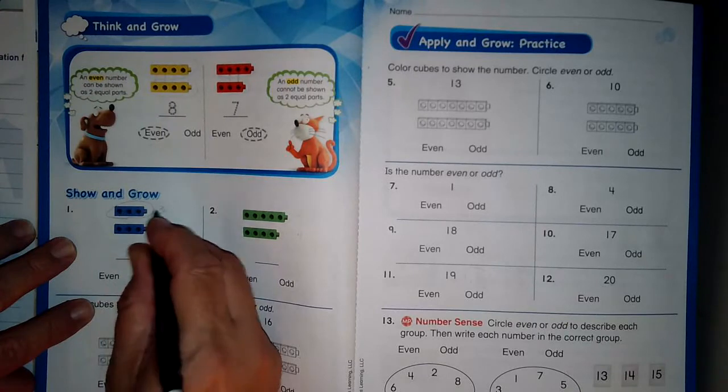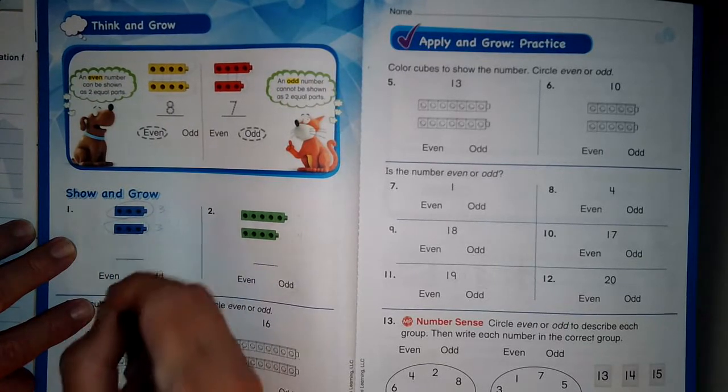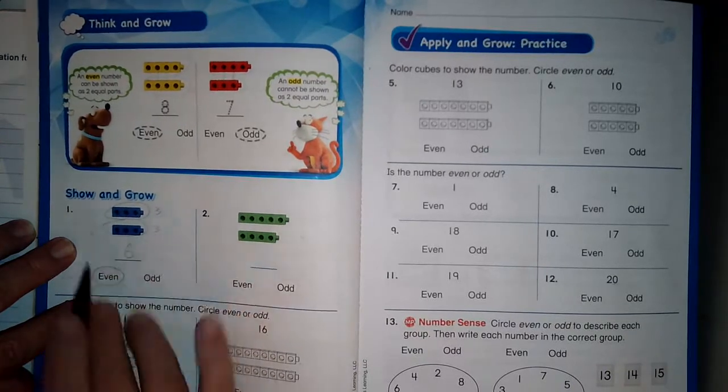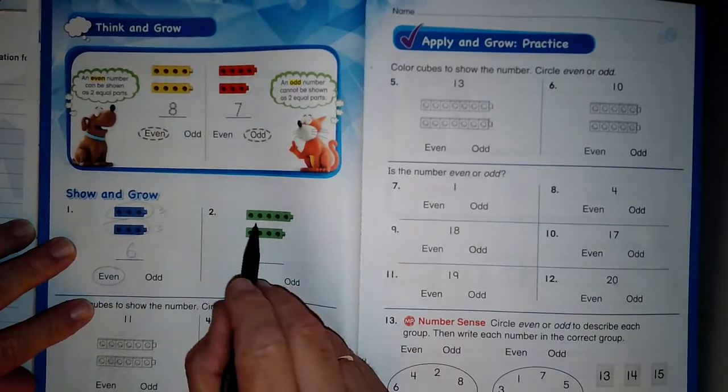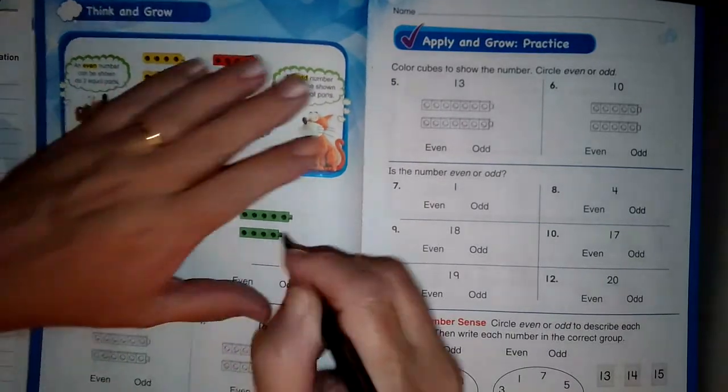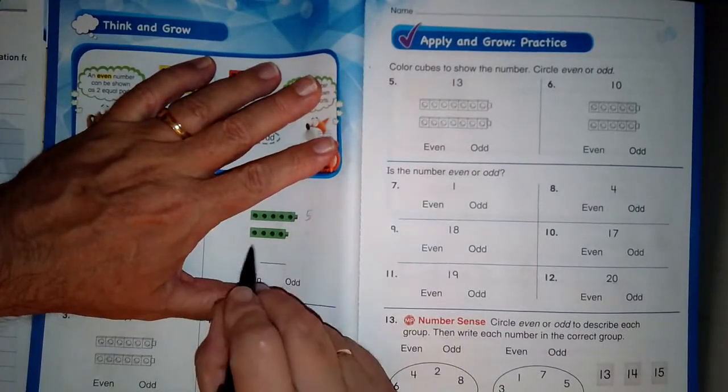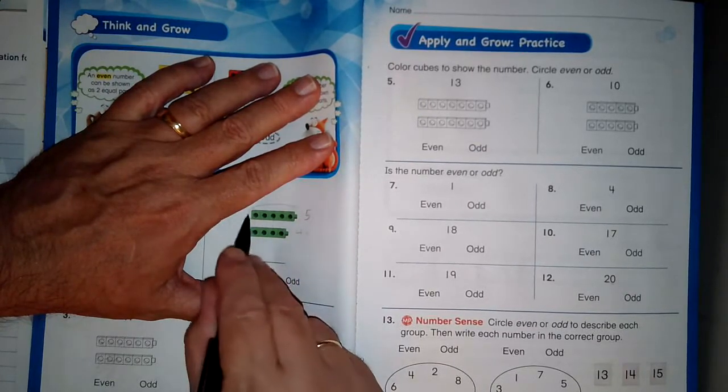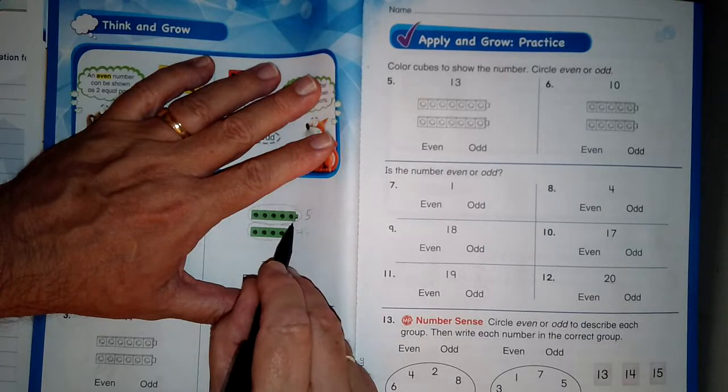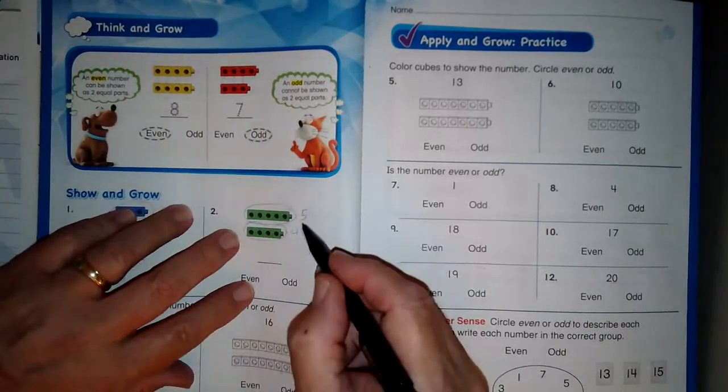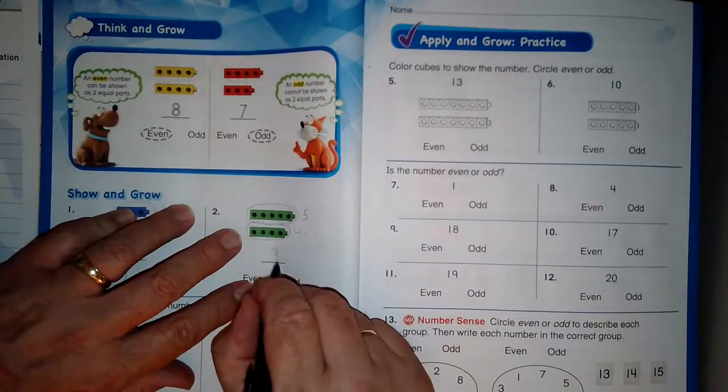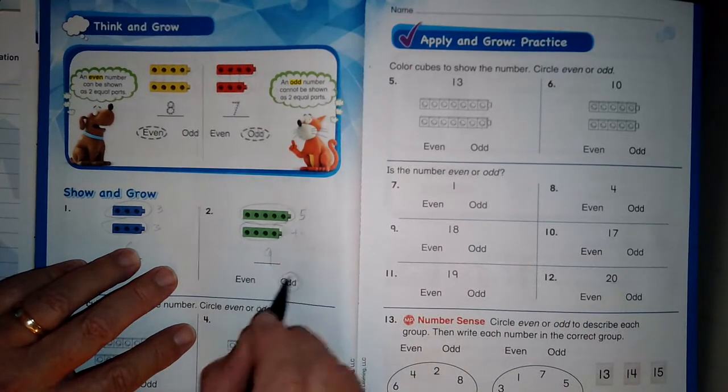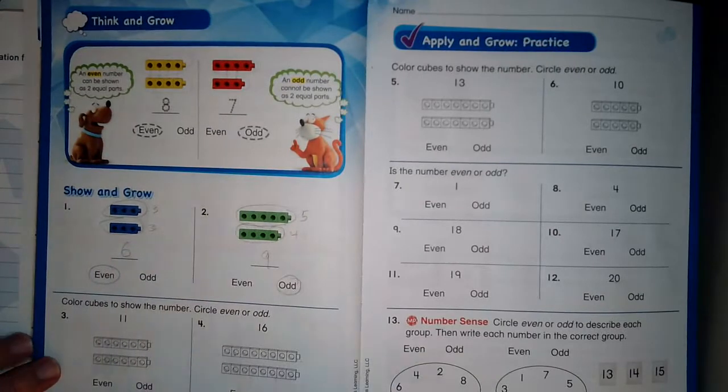Nine. And nine, since it doesn't have two equal groups, is an odd number.